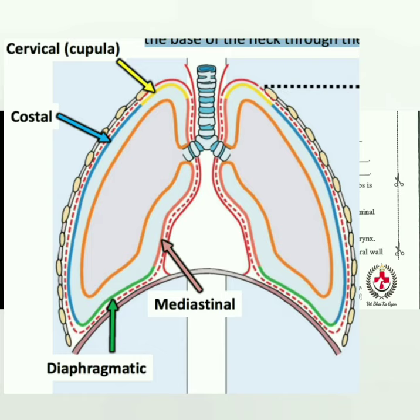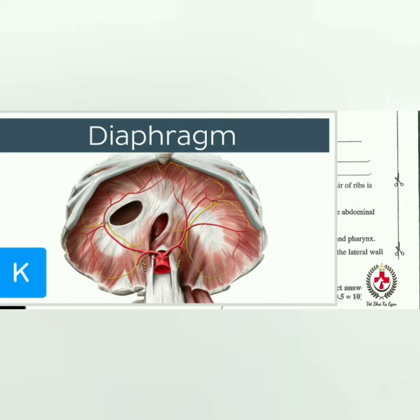The extension of the pleura as a blind pouch-like structure at the head of the first pair of ribs is known as the cupula. The muscular tendinous structure which divides the thoracic cavity from the abdominal cavity is the diaphragm.